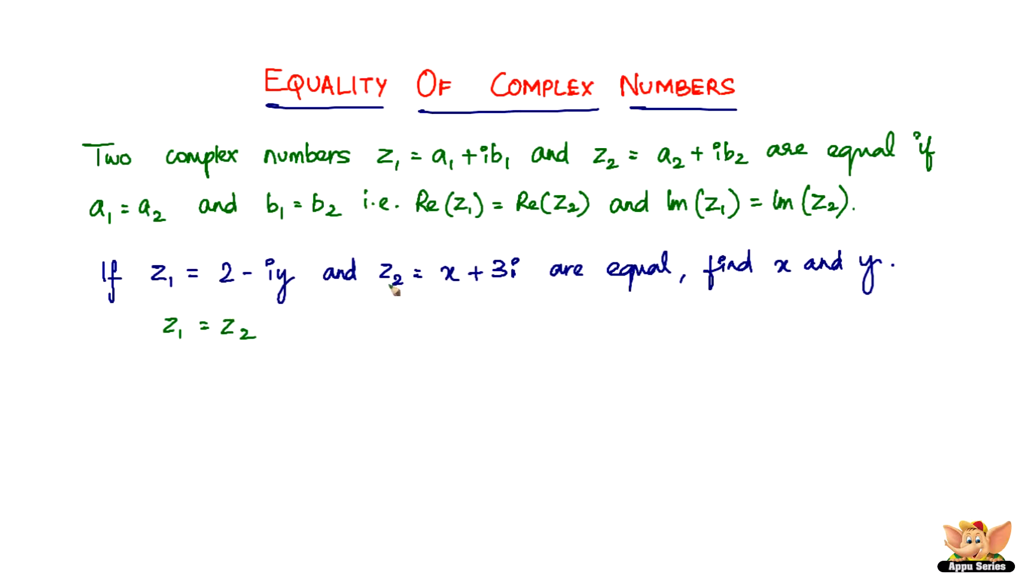If z₁ is equal to z₂, then a₁ should be equal to a₂ and b₁ should be equal to b₂. This is a₁, this is a₂, so in this case x is 2, because 2 should be equal to x. Therefore x = 2.